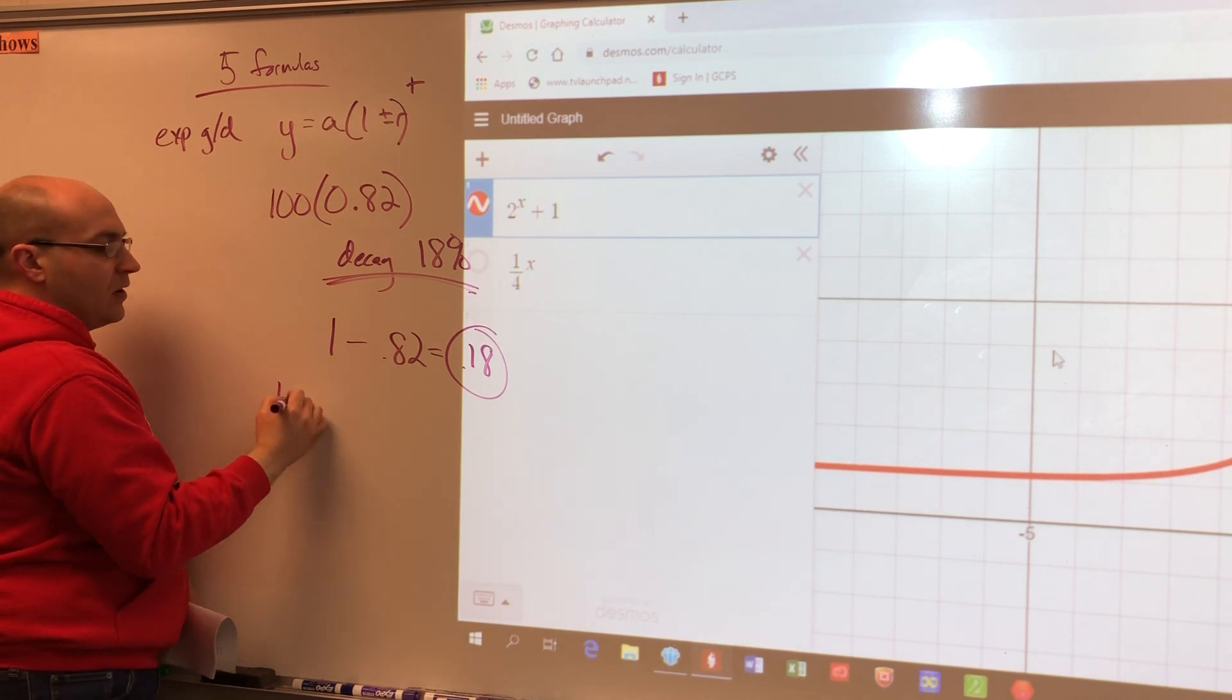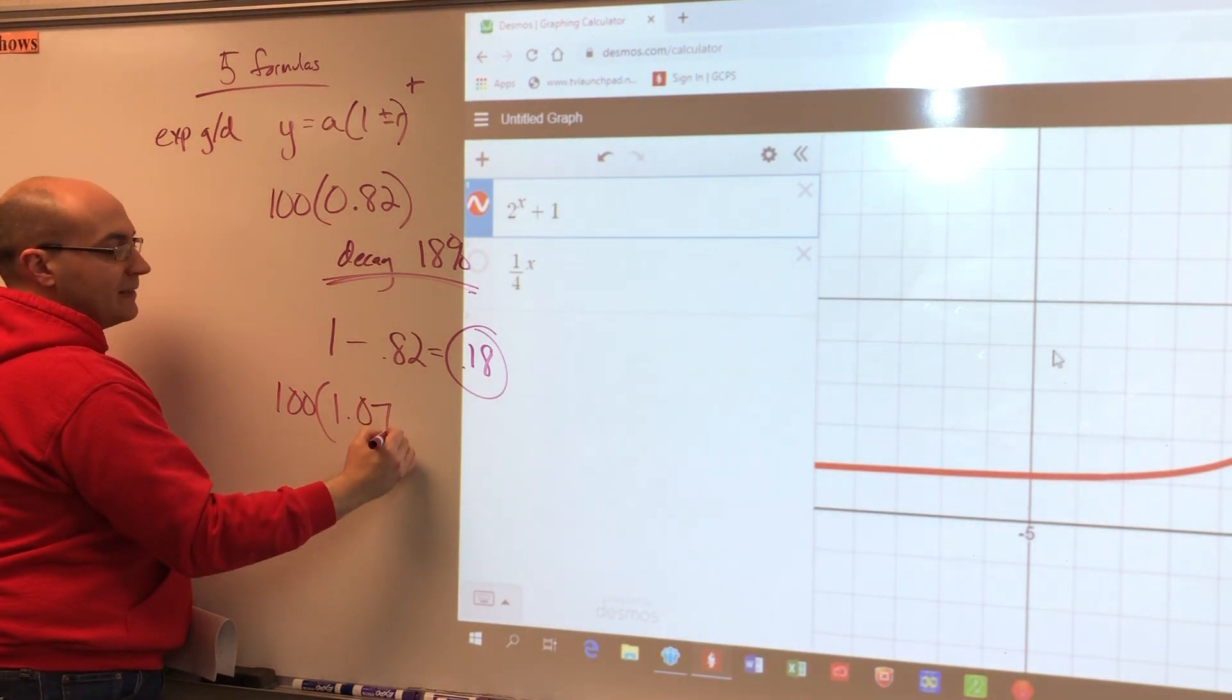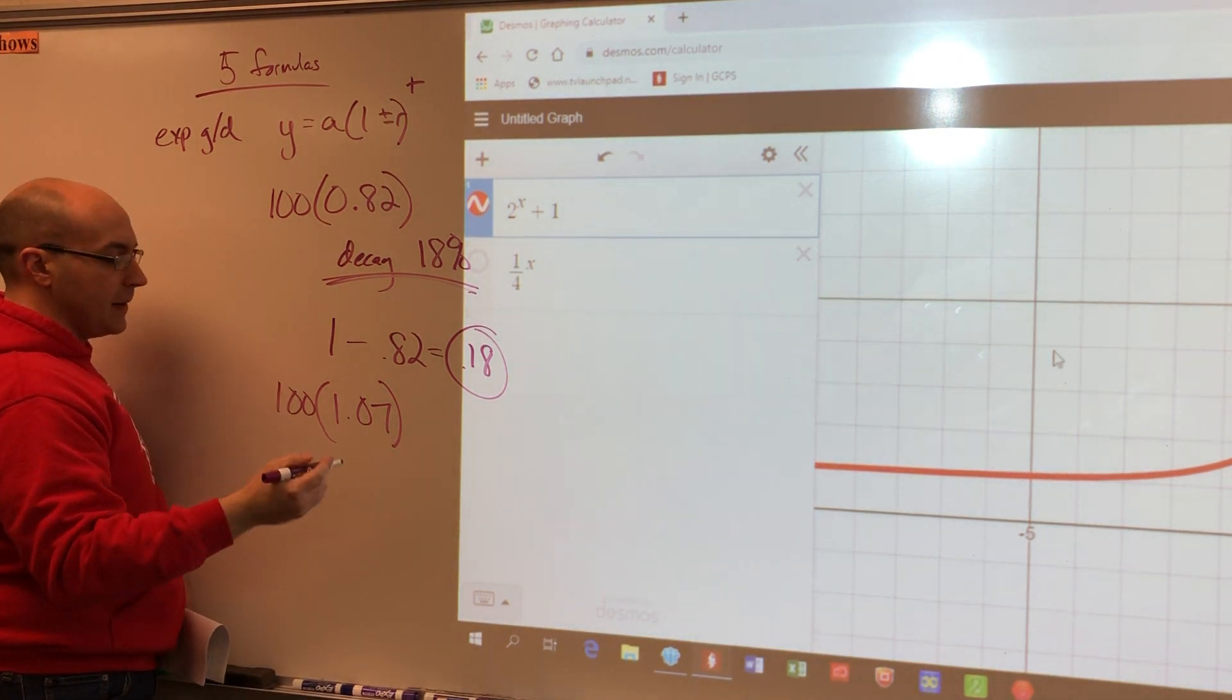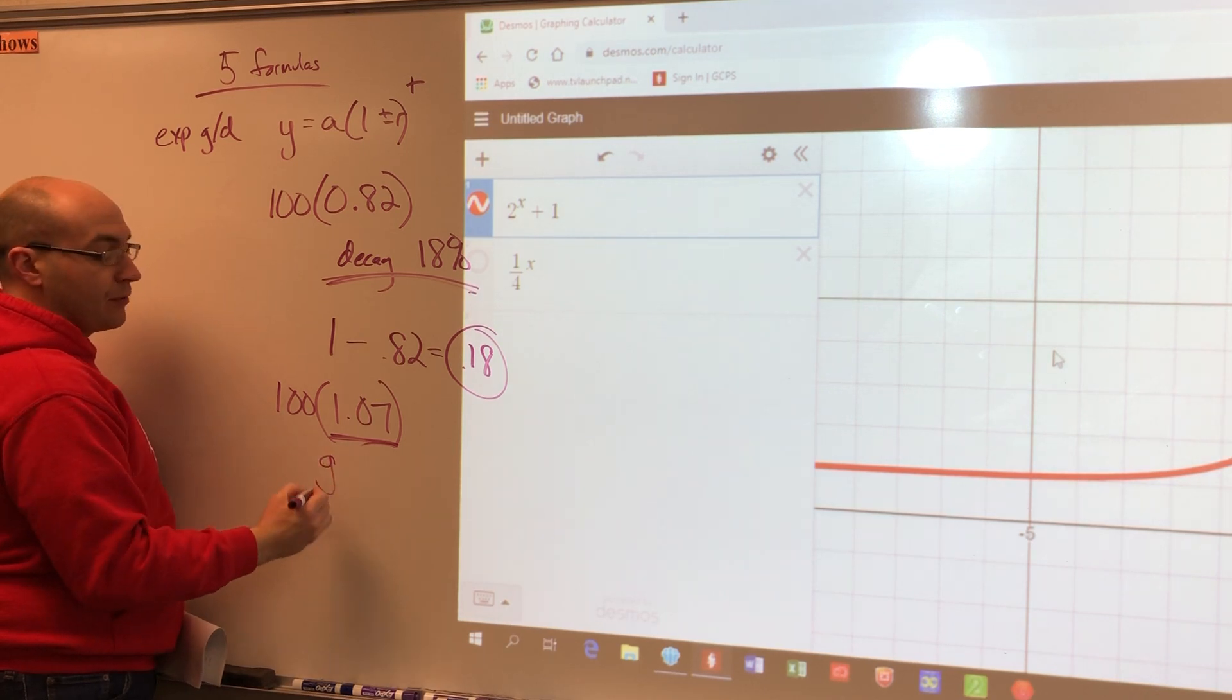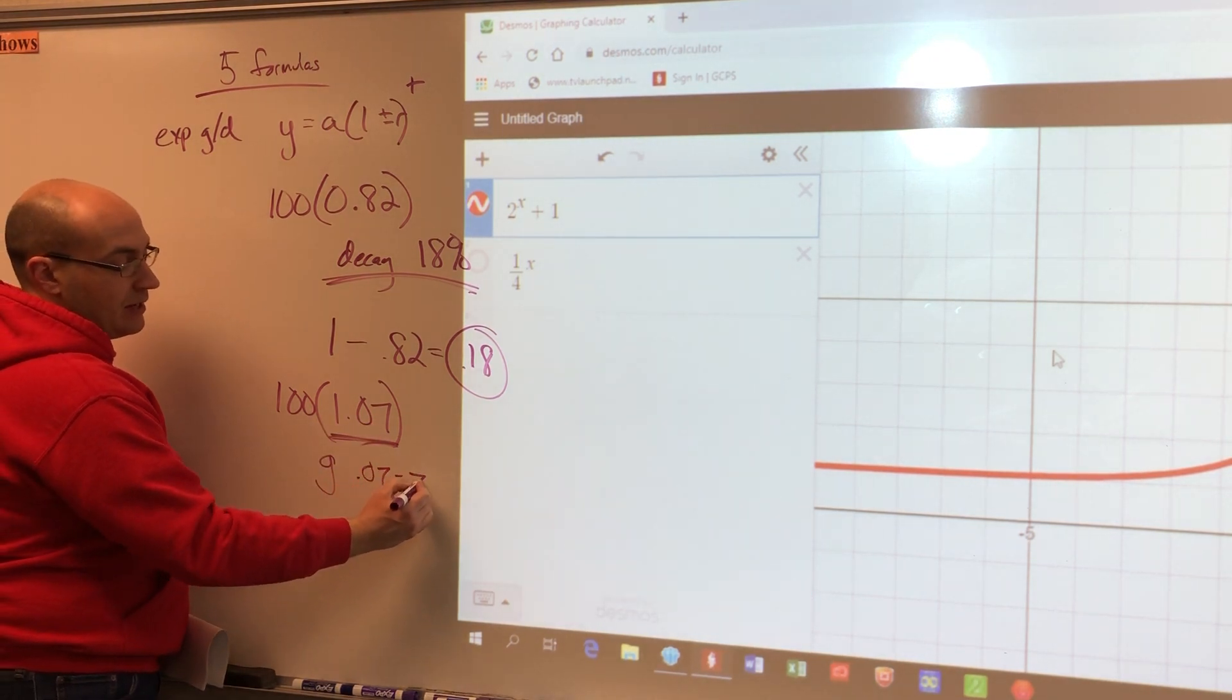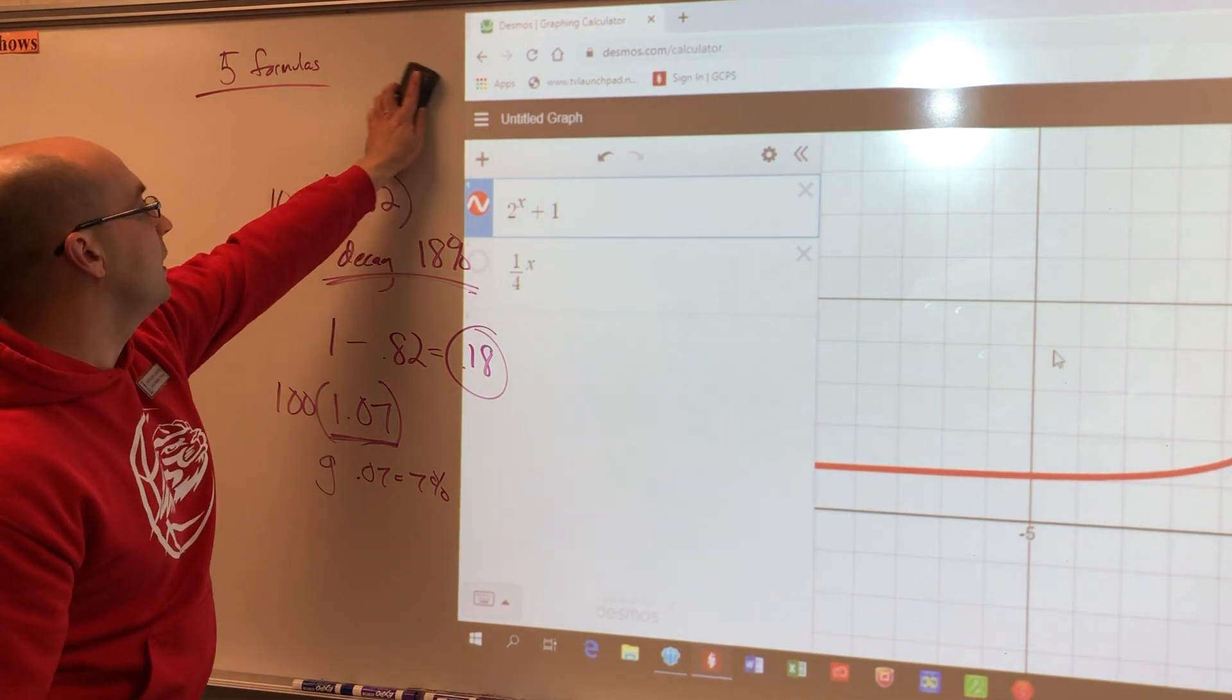Conversely, the other is if I have a hundred and I say it's 1.07, right? Growth or decay. And what is the rate of growth or decay? This number is bigger than one. It's greater than one. So I know that it's growth, but what is the rate of growth? Well, this one's easy because you can see it. It's 0.07, which is 7%. So just be really, really careful when you do those problems for growth and decay.